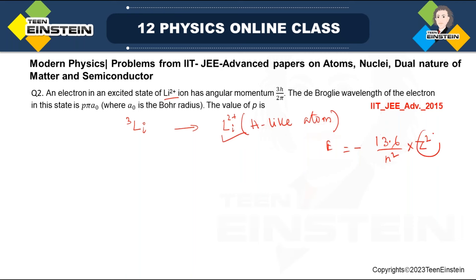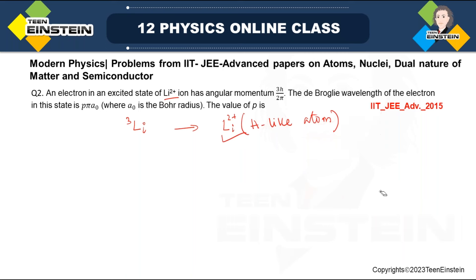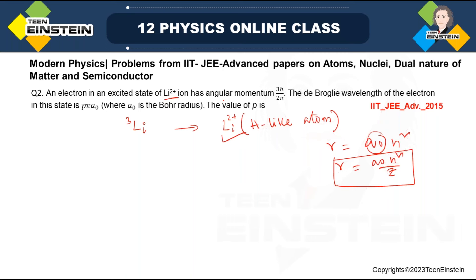For a hydrogen-like atom, the Bohr orbit radius is a₀n²/Z. The Bohr postulates and angular momentum quantization can be applied. An electron in an excited state of lithium 2+ ion has angular momentum equal to 3h/2π. We know angular momentum L = nh/2π. Comparing, we get n = 3, meaning the lithium 2+ ion is in its second excited state.